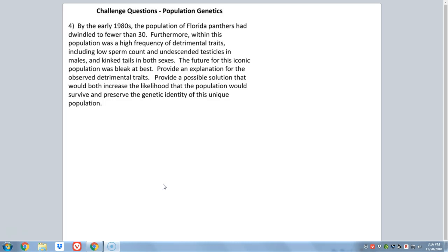So let's wrap up here with question four. The last question from these challenge questions. This question has you consider the Florida panther. This is based on truth, this case here. By the mid-1980s, the population of Florida panthers had dwindled to fewer than 30 total individuals in the population. That's a very, very endangered species near extinction. Furthermore, within this population, there was a high frequency of detrimental traits. This normally happens when population dwindles to such a small size, including low sperm count, undescended testicles in the males, and these kinked tails in both sexes. The future for this population was bleak.